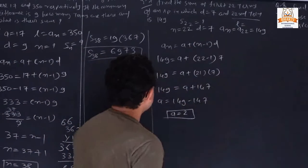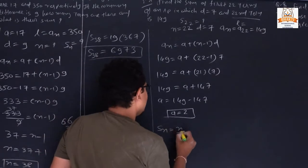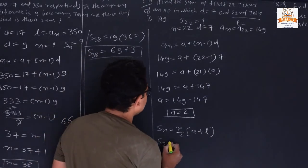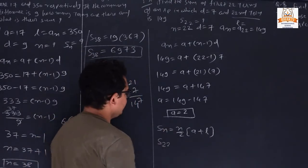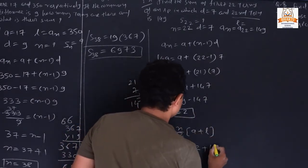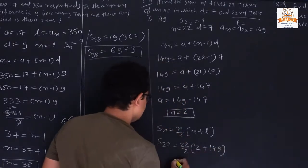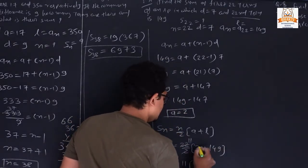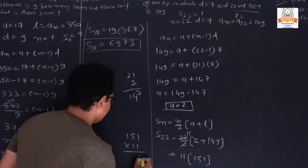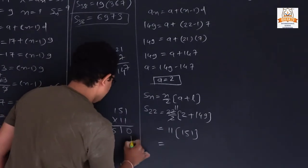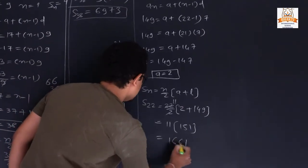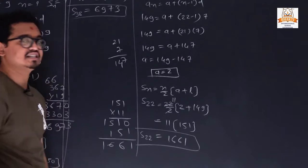Since we now have both the first and last terms, we use S22 = n/2 × (a + l) = 22/2 × (2 + 149) = 11 × 151 = 1661. The sum of the first 22 terms is 1661.